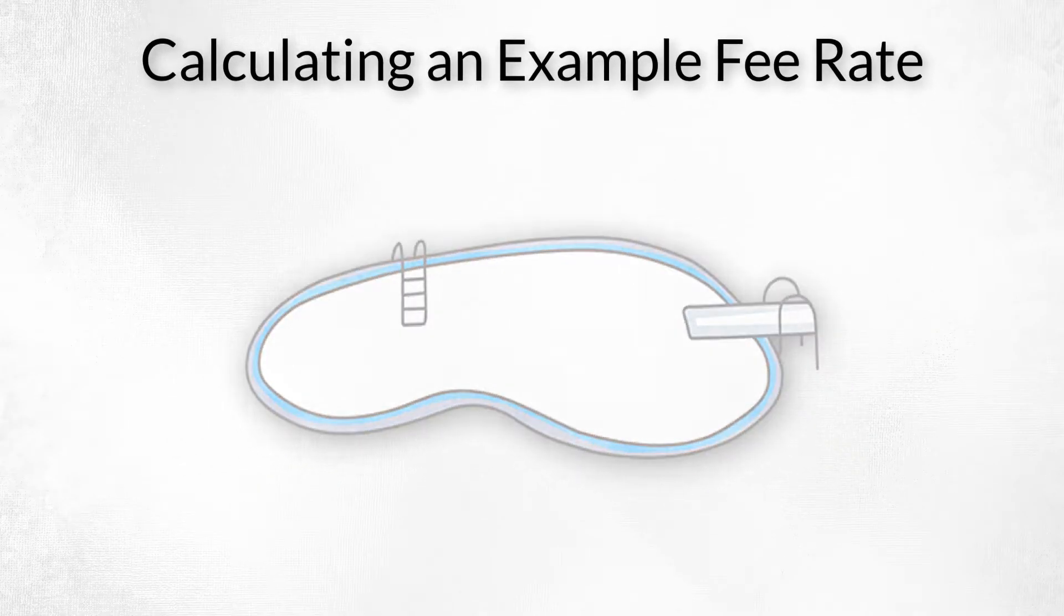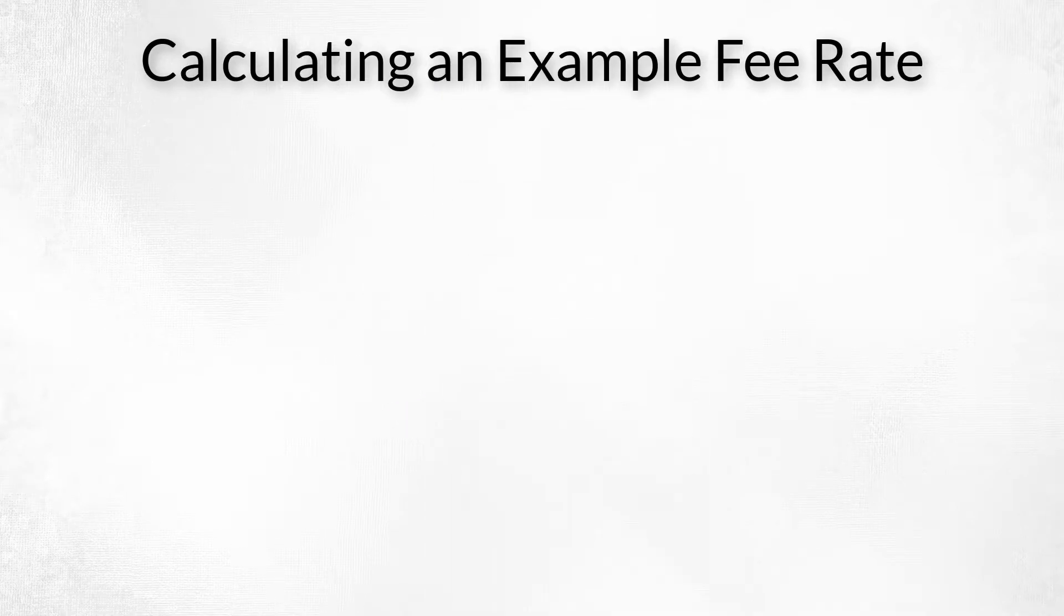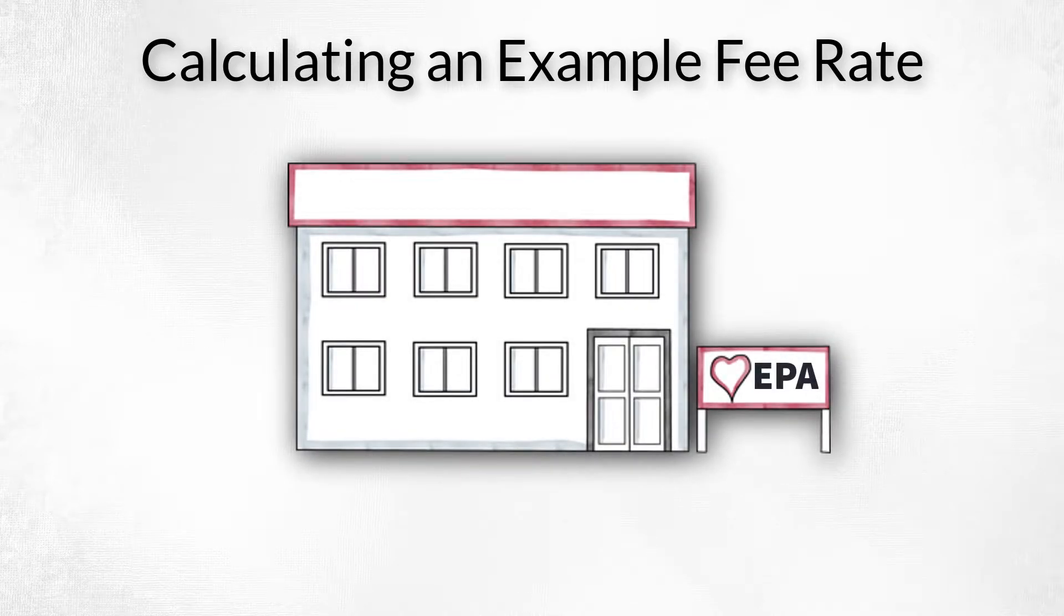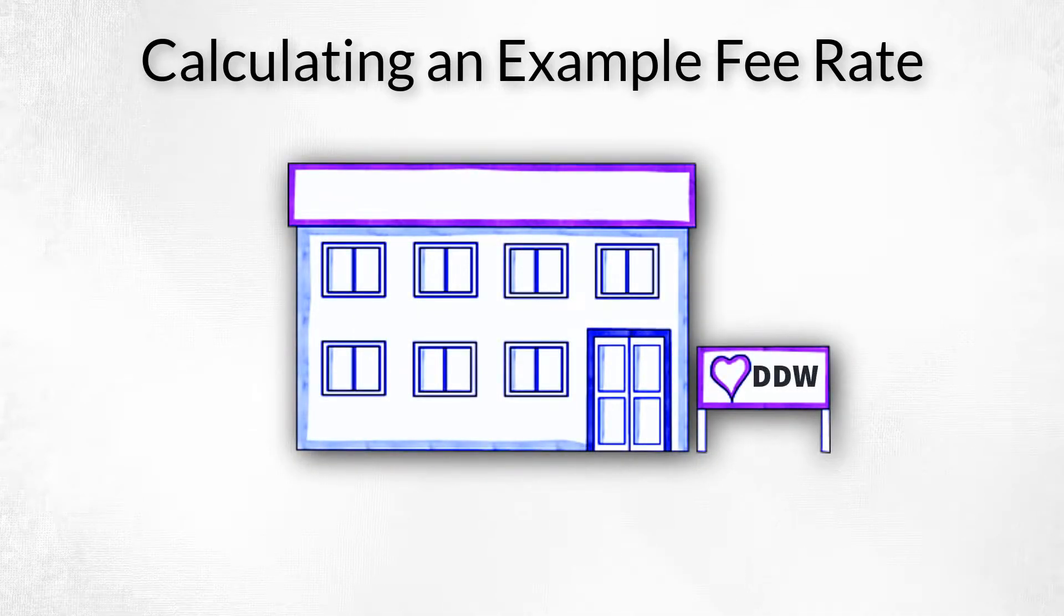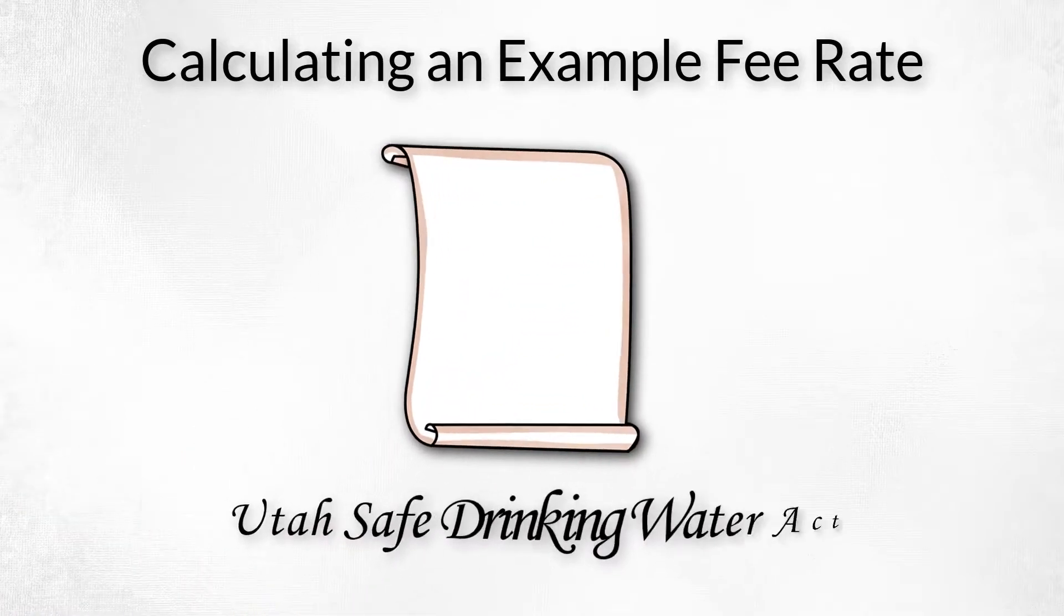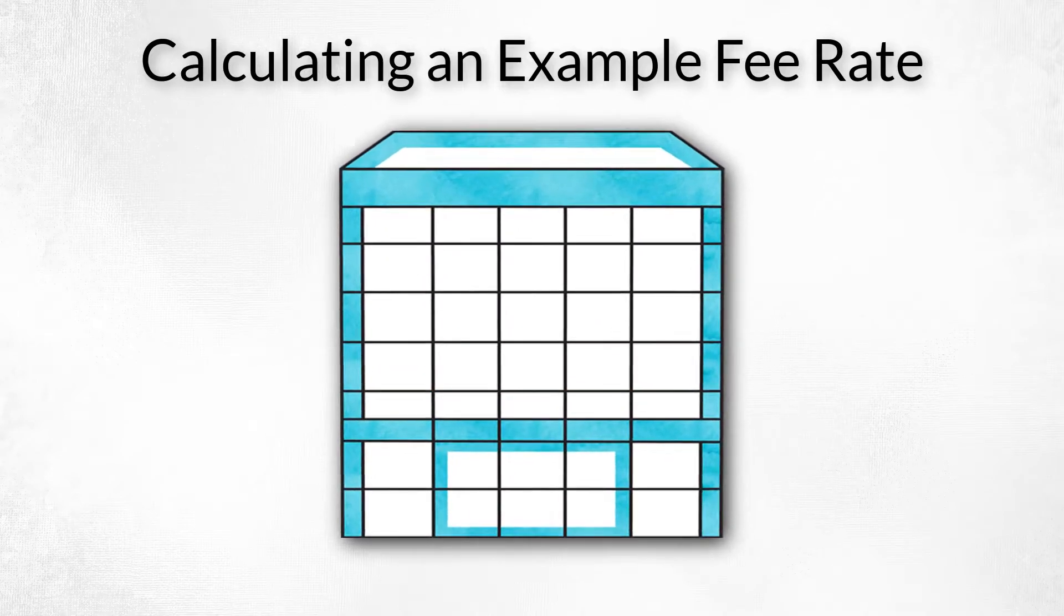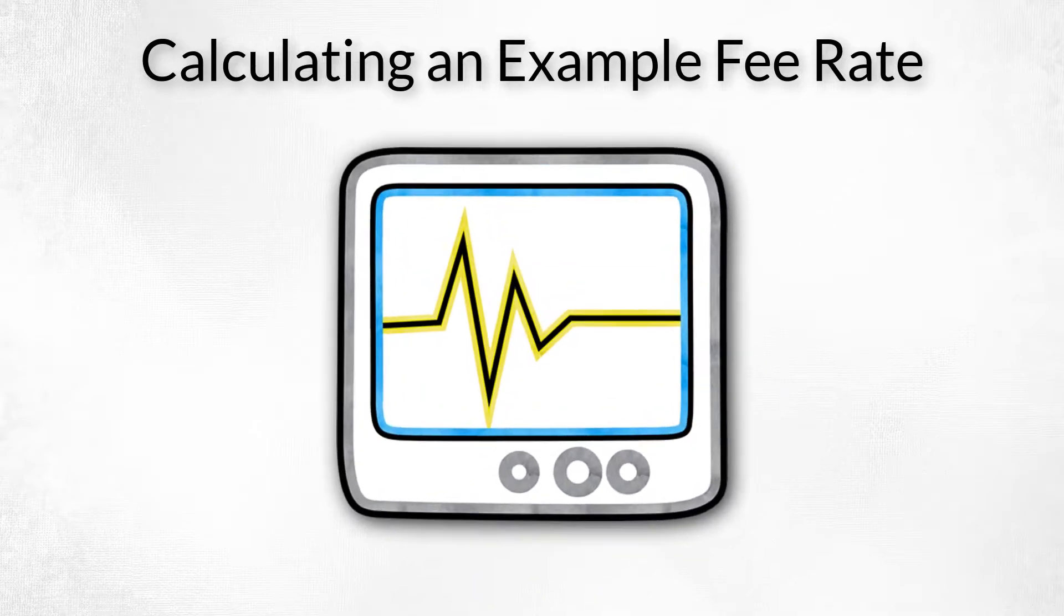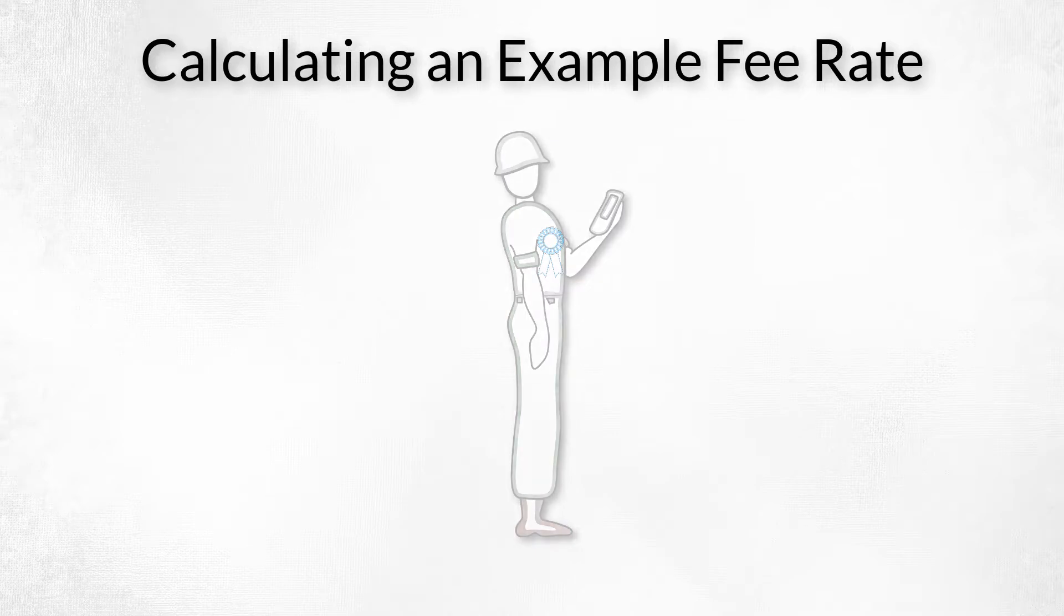Let's dive into a common example: calculating a culinary water service fee. First, what are the relevant laws? The Safe Drinking Water Act is the federal law that empowers the EPA to enforce rules that must be met by each public water system. By agreement with the EPA, the Utah Division of Drinking Water administers this federal law in Utah. The Utah Safe Drinking Water Act, a state law, empowers the Utah Drinking Water Board to enact rules for water systems.